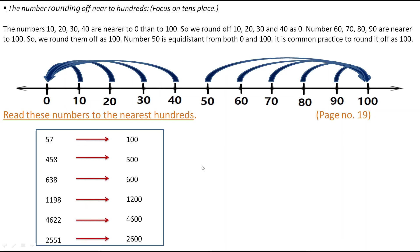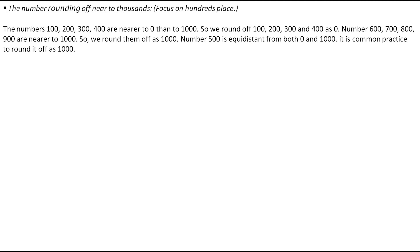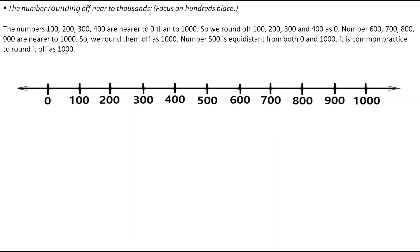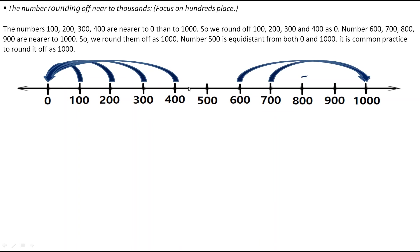Now let's see the rule for rounding off to the nearest 1000 — we have to focus on the hundreds place. Looking at the number line: 100, 200, 300, and 400 are nearer to 0 than 1000, so they round off to 0. The numbers 600, 700, 800, and 900 are nearer to 1000, so they round off to 1000. The number 500 is in the middle, but it still rounds off to 1000.